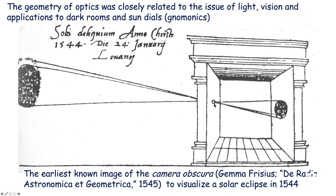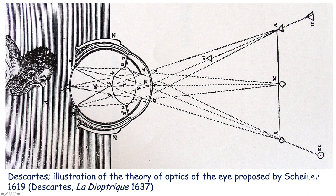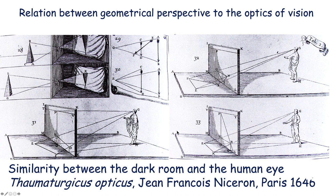It was used to visualize the solar eclipse of 1544 — you can see here the little hole, the camera obscura, which reflects something seen from a side. Descartes was well aware of the optics of the eye. When he wrote the Dioptrique, he used drawings to understand how the eye works — with the lens and the projection of the outside world onto the back of the eye, though at the time he knew nothing about the retina. There is a good relation between geometrical perspective and optical vision. You can see the shape of a triangle projected onto a window and how the eyes actually see, with a similarity between the darkroom and the human eye — about 1646 in Paris, by Jean-François Nicéron.